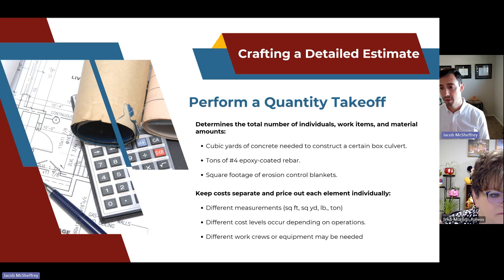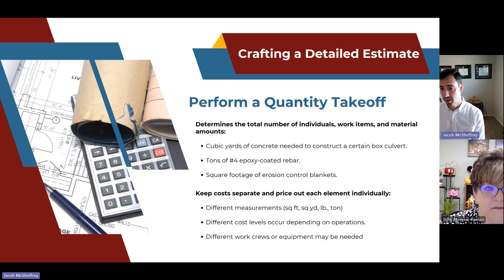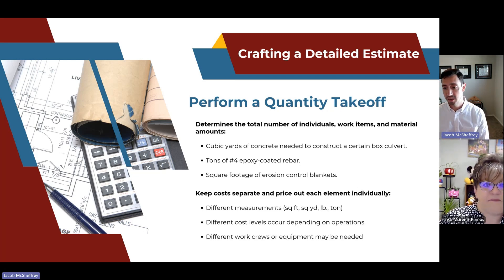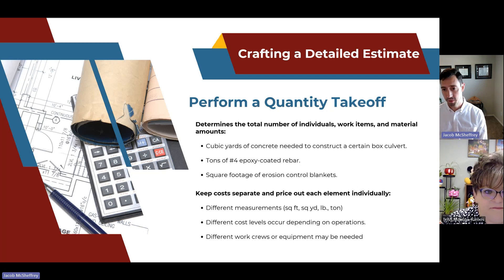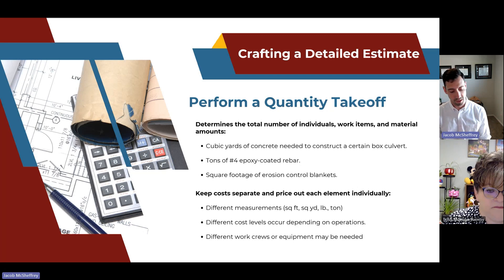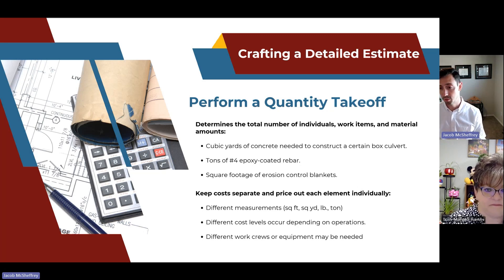Pay attention to different measurements when looking at estimate quantities in plan sheets — make sure you're doing the right calculations. Is it square feet, square yards, pounds, or tons? Different cost levels occur depending on operations, and different crews or equipment may be needed. Through the plans and estimates of quantities, figure out what this project is going to look like. Step back and take a 30,000-foot approach — determine the likely sequence of events based on your industry experience with similar projects.